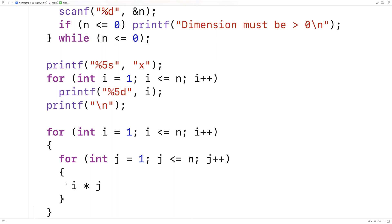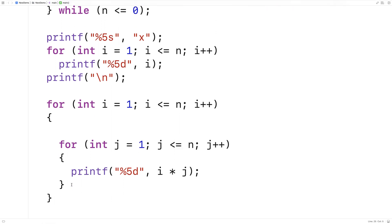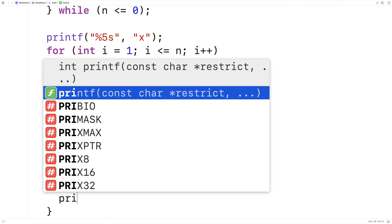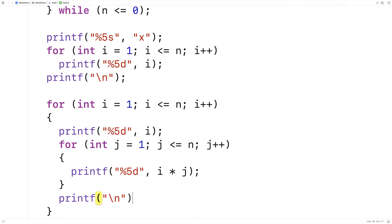Next let's actually properly output this number into a field that is five characters in width. We'll say printf %5d and output i times j into that field. We'll also have to output the row heading, so we'll say printf %5d and output i. Then after we're done outputting the row, we'll output a newline so the next row starts on a new line.